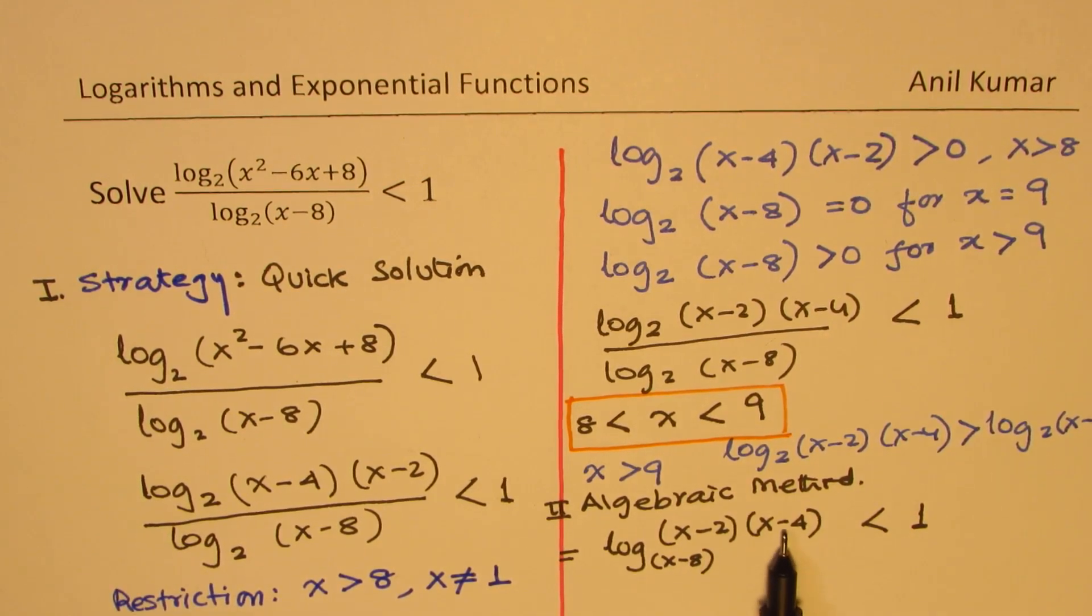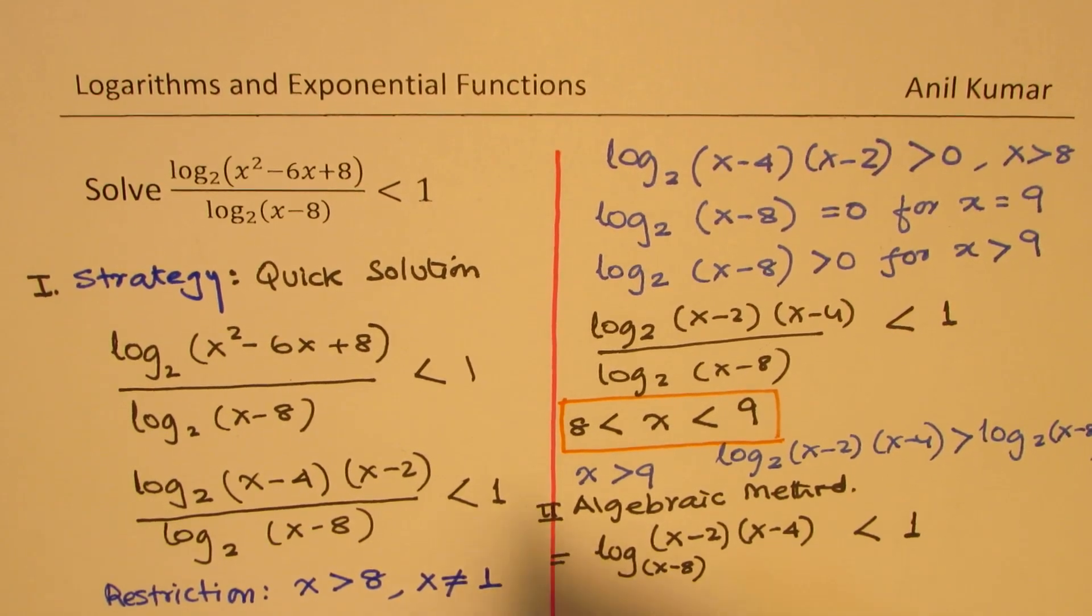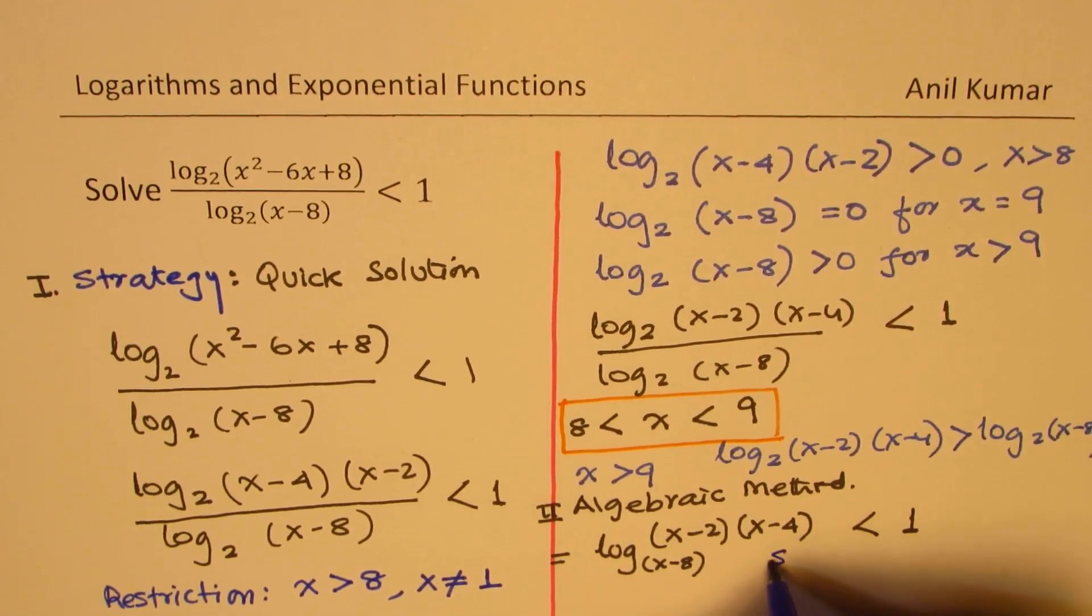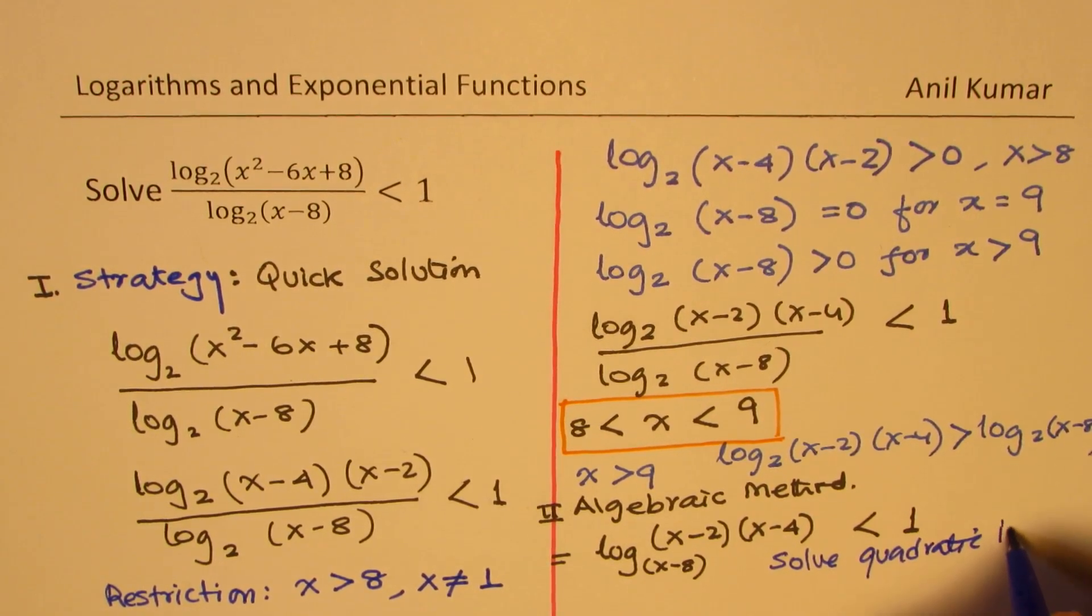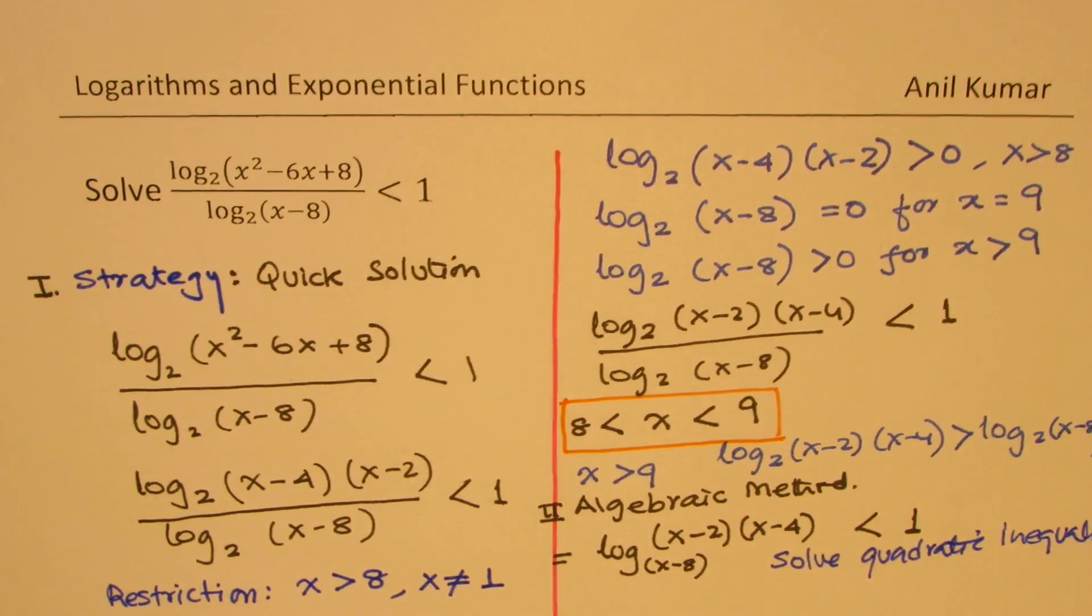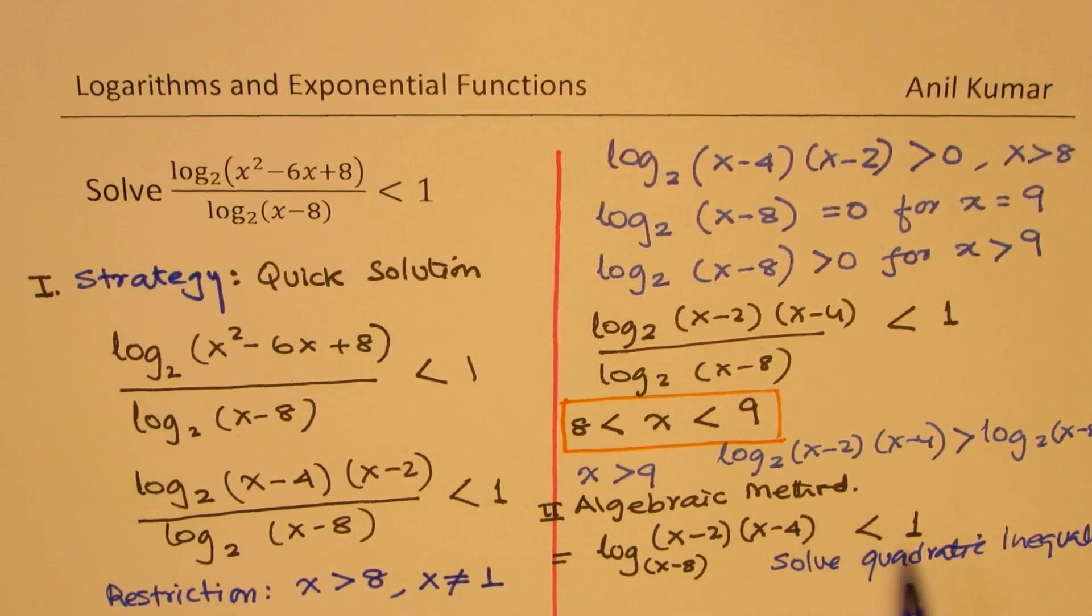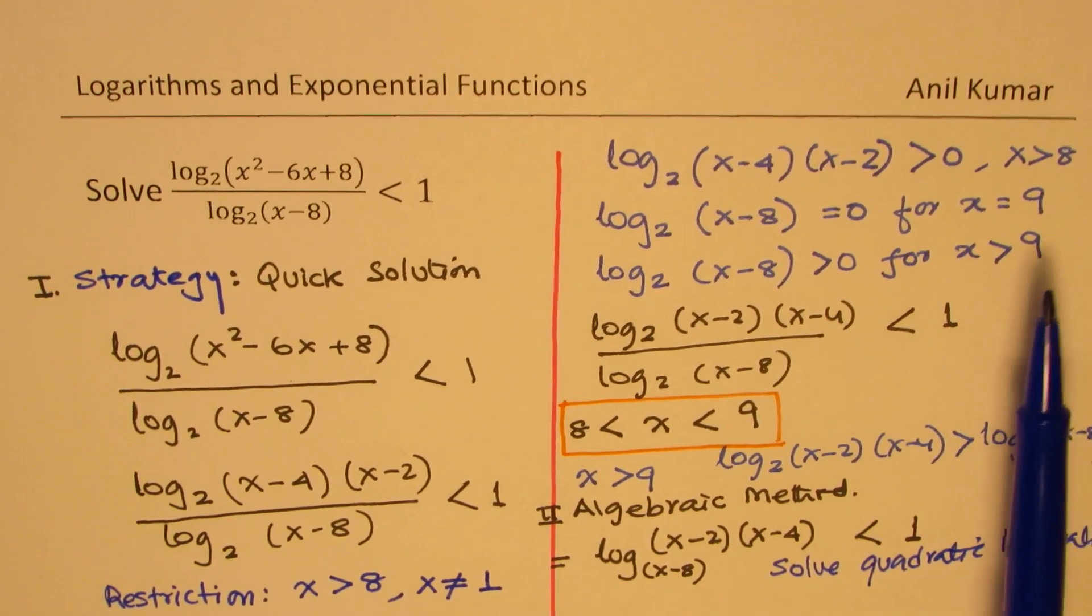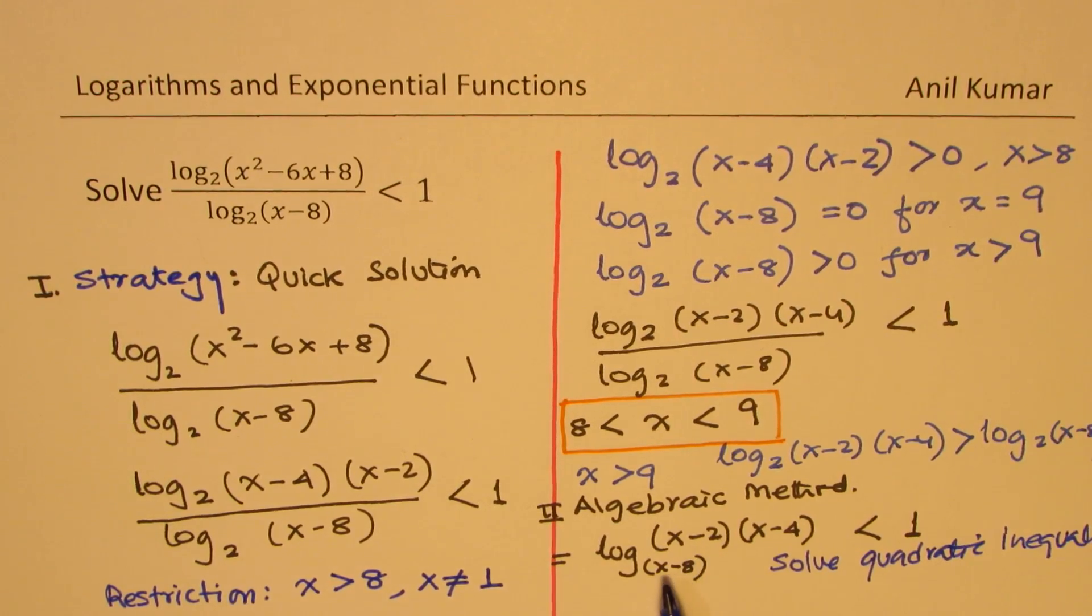And now, you can solve this particular equation easily by taking x minus 8 to the right side, and you have (x - 2)/(x - 4) on the left side. So it becomes a quadratic inequality. And you will actually get the same result, but even before solving this, you will have to provide these reasonings because we need to restrict this domain.